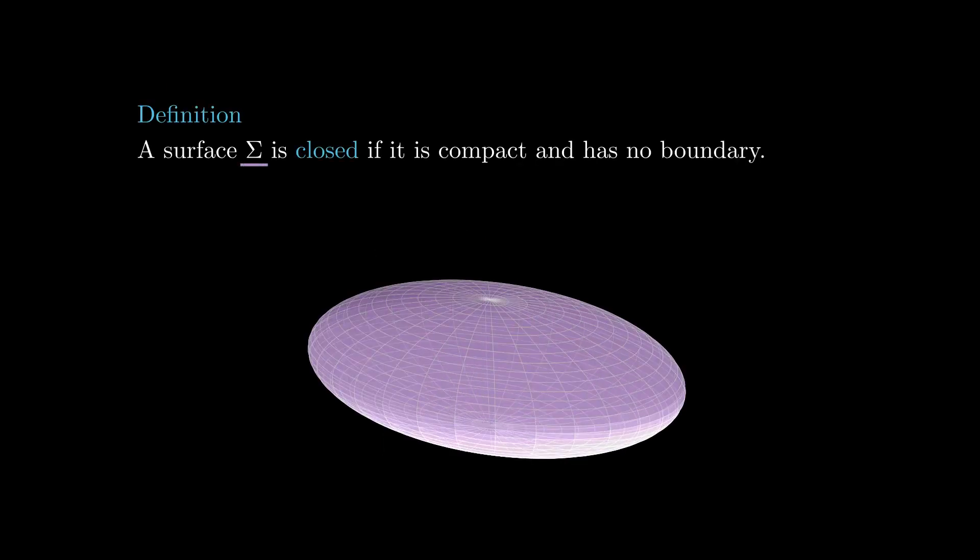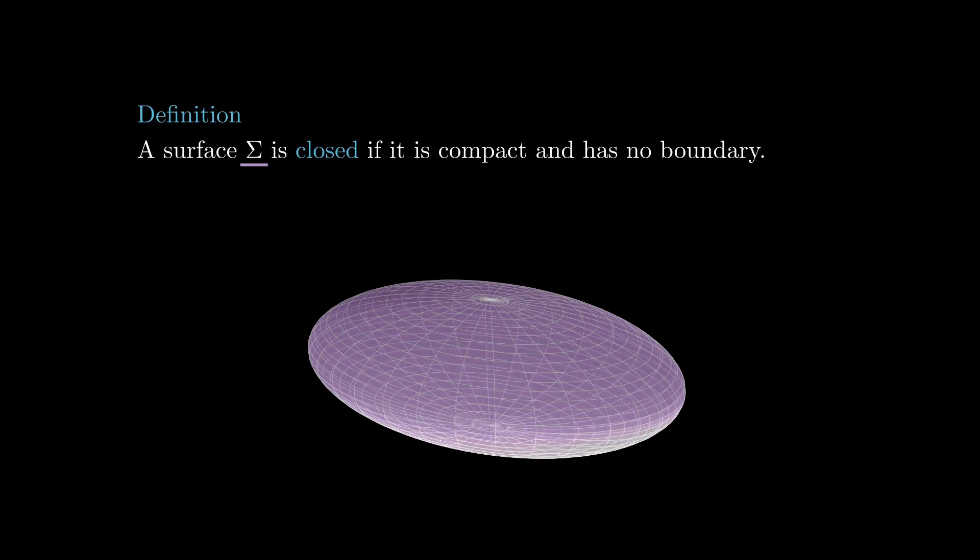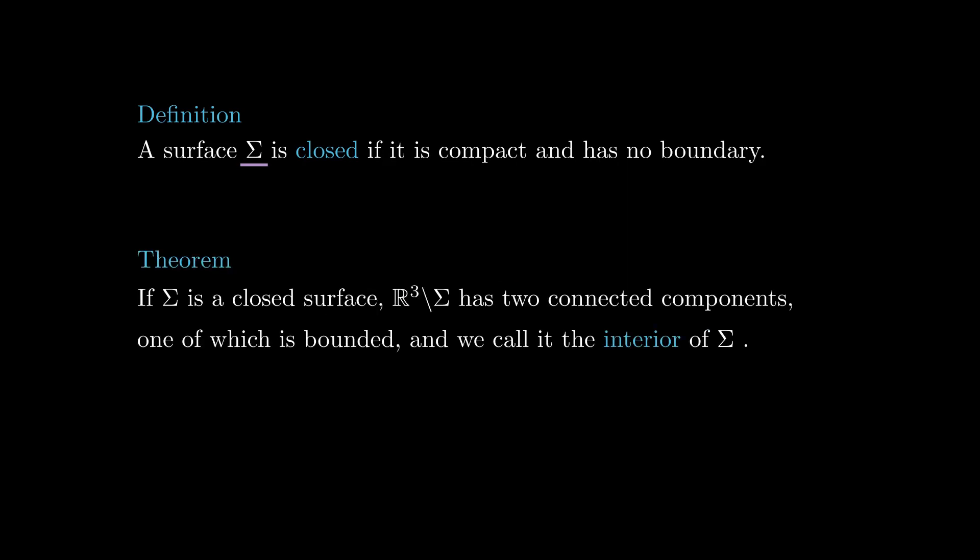We say that a surface in the three-dimensional space is closed if it is compact and it doesn't have boundary. For surfaces of this kind, there is an analog of the Jordan curve theorem. If σ is a closed surface, then its complement has two connected components, one of which is bounded and we call it the interior of σ.